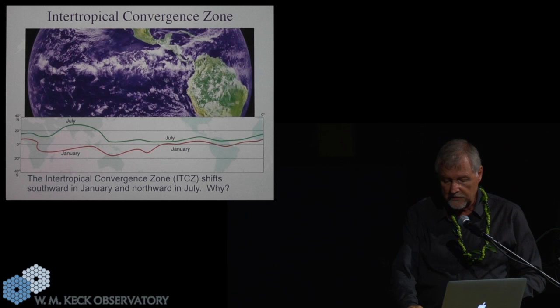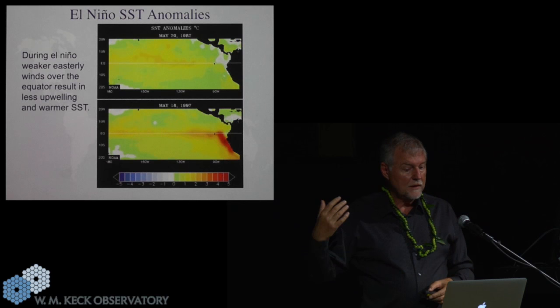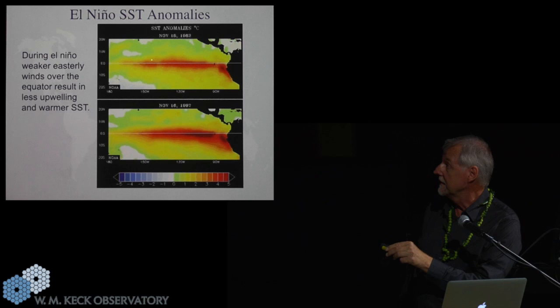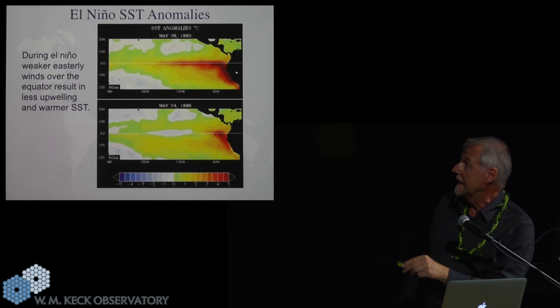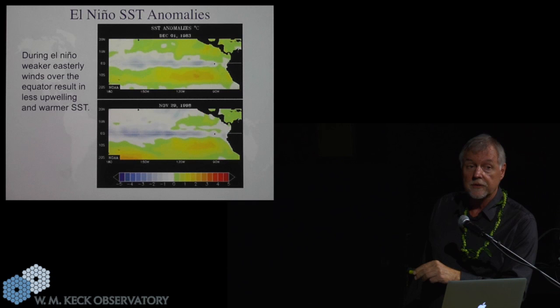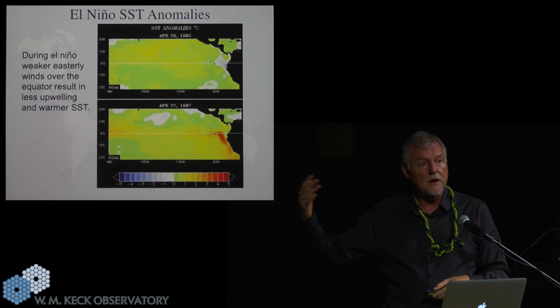This is an animation of how an El Nino forms, the anomaly pattern. You can see that it's building here. This is an El Nino of 1982, and this is the 1998 one. But notice that at the end, it cools off, and you get this cool pattern afterwards. That cool pattern is La Nina. So El Nino is followed by La Nina.